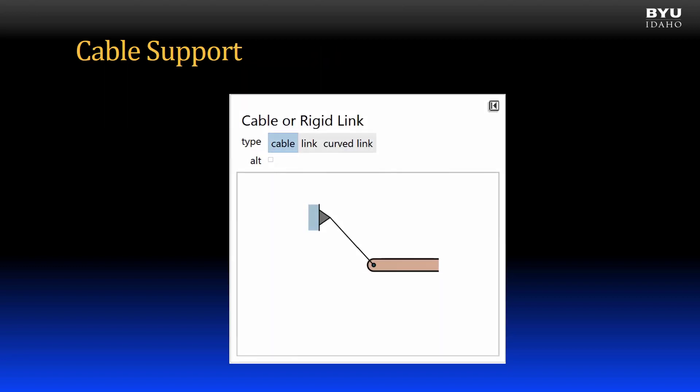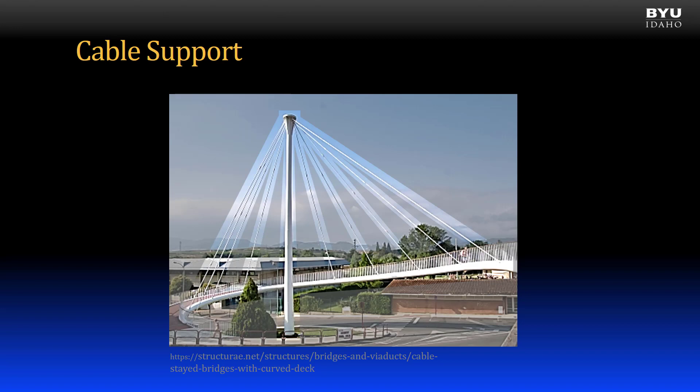Next, let's look at a cable support. In this case, the body is supported by a cable, rope, or cord. We model the reaction as a single reaction force pulling on the body, with the force oriented in the direction of the cable. Cables can only support tension force, or pull on the body. The end of the body is free to rotate, so there is no moment reaction. A cable-stayed bridge is a common example of a cable support on a body.